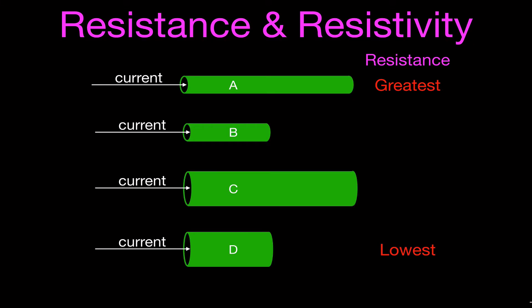You'll notice B and C: C is twice as long as B, but C also has twice the diameter of B. So those two would have the same resistance — somewhere between A and D — and they would have the same current flowing through them.